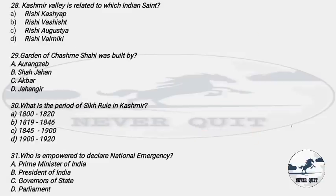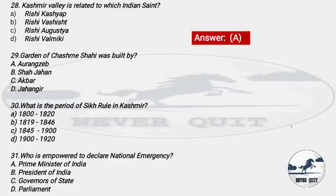Question 28: Kashmir Valley is related to which Indian saint? Options: A) Rishi Kashyap, B) Rishi Vashisht, C) Rishi Agastya, D) Rishi Balmiki. The right answer is option A — Rishi Kashyap, because the name Kashmir itself is derived from Kashyap's name.